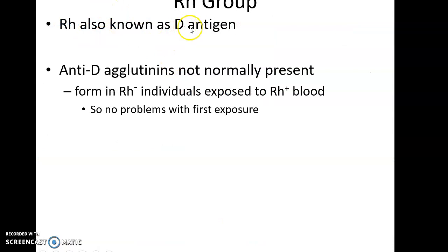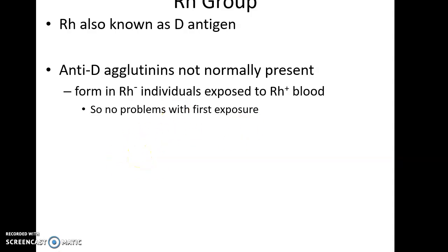Rh is also known as the D antigen. You can say anti-D antibodies or anti-Rh antibodies interchangeably. People who are Rh negative do not have antibodies against the Rh factor initially — they need a first exposure before developing those antibodies. However, when a patient in the hospital needs a blood transfusion, you have no idea if they've been exposed to the Rh antigen, so you assume: if someone is Rh negative, you must give them Rh negative blood.